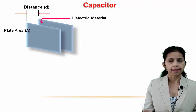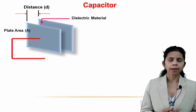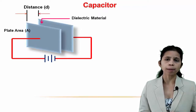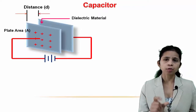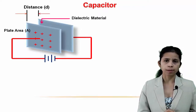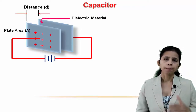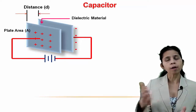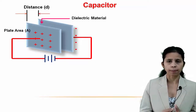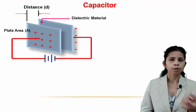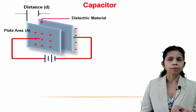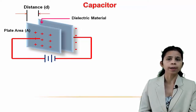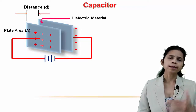If a parallel plate capacitor consisting of two parallel plates having area A, separated by distance D, and having some dielectric material between them, is connected to the opposite terminals of a battery, then a charge Q is developed on both plates of the capacitor. Positive charge is developed on one plate and negative charge on the other plate.